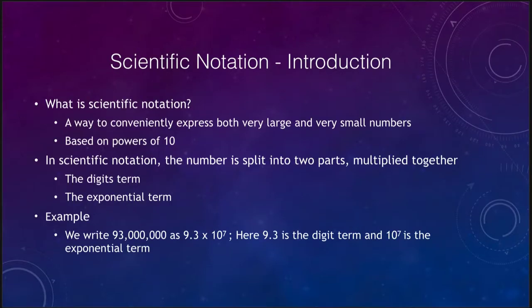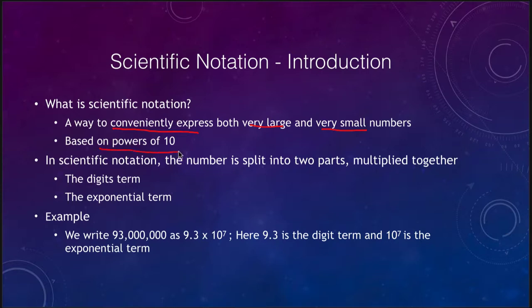Scientific notation is a way to conveniently express both very large and very small numbers. In science we often have numbers that are much larger or much smaller than we are typically used to using. Because of all of those zeros involved, it makes it much more convenient to express them in scientific notation, which is based on powers of 10.